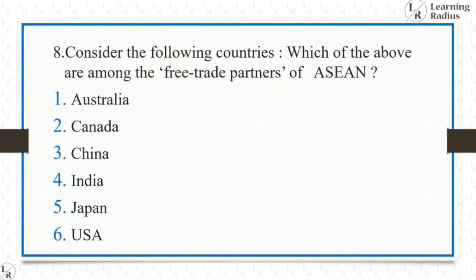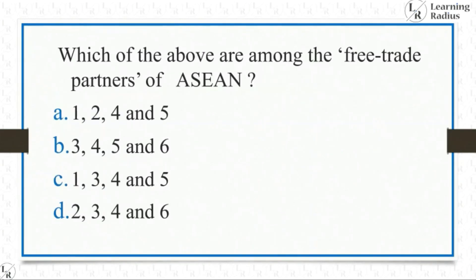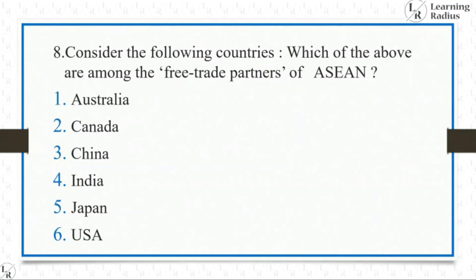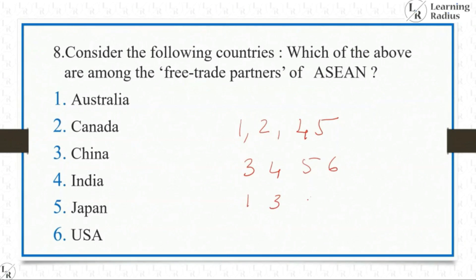Consider the following countries — which of the above are among the free trade partners of ASEAN? The countries listed are: 1. Australia, 2. Canada, 3. China, 4. India, 5. Japan, and 6. USA. The options are: 1, 2, 4 and 5; 3, 4, 5 and 6; 1, 3, 4 and 5; or 2, 3, 4 and 6. This is not easy — you need to read newspapers with clear understanding.